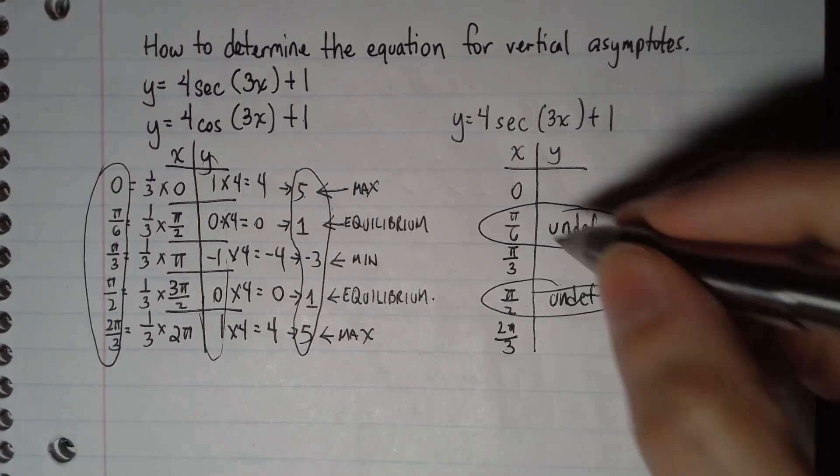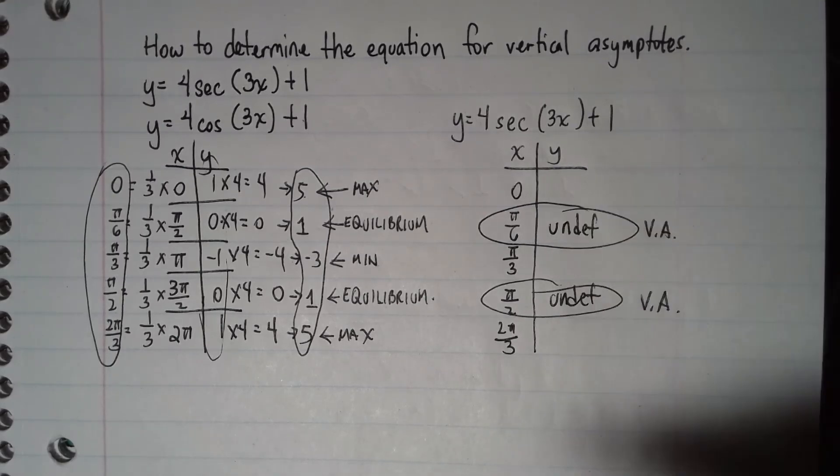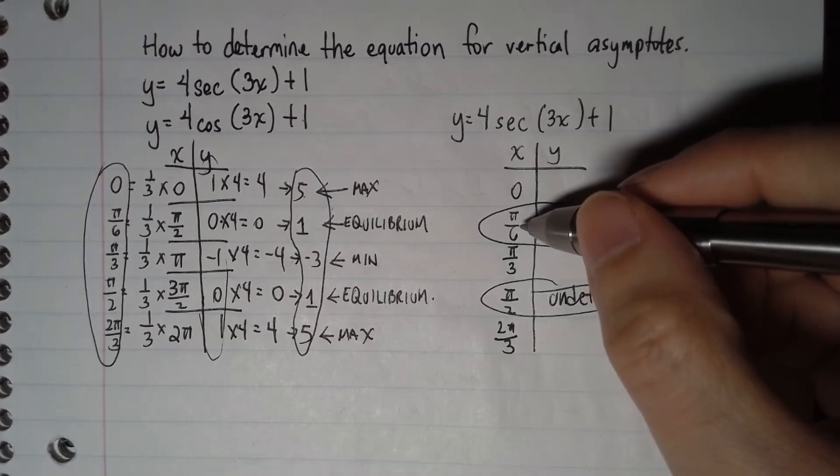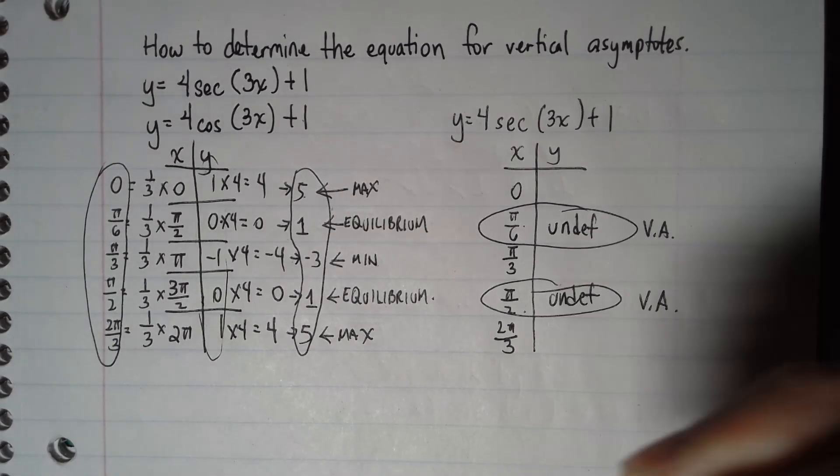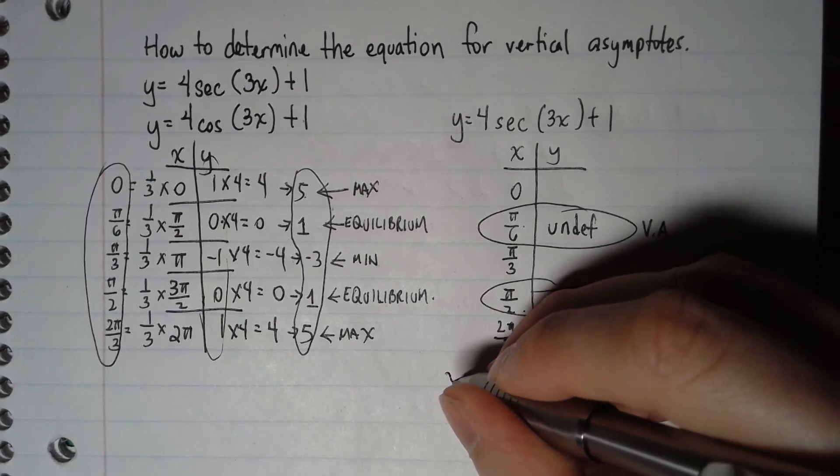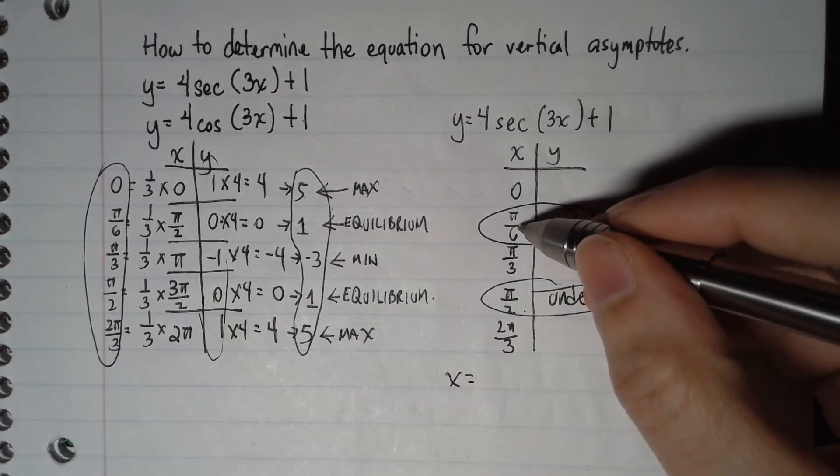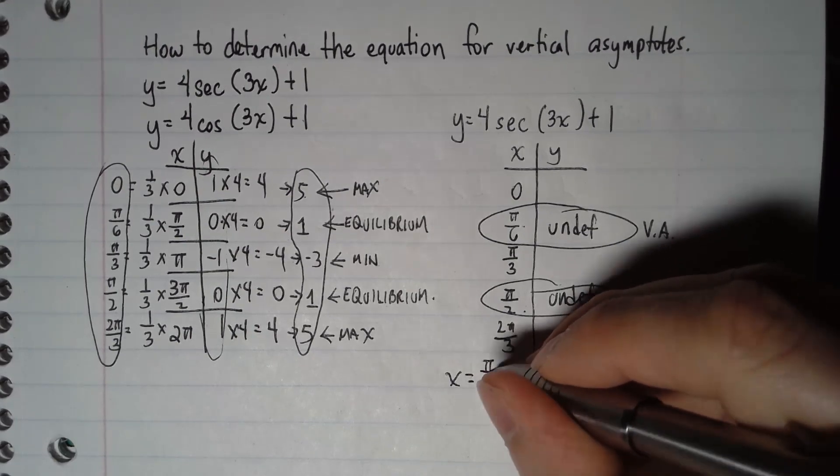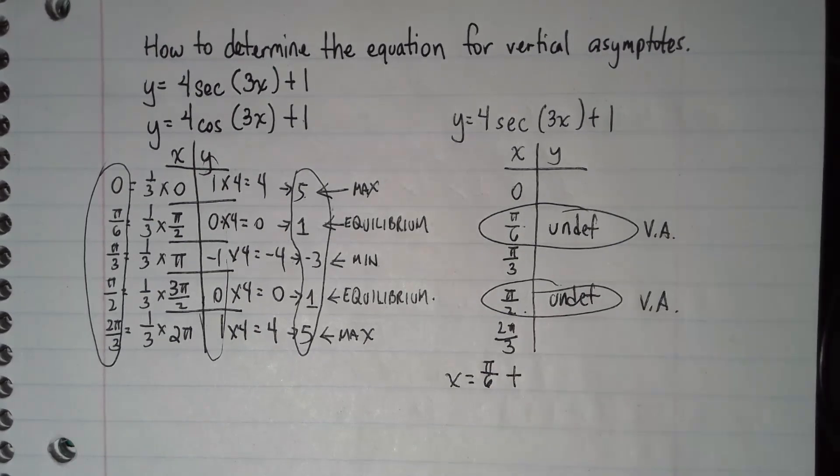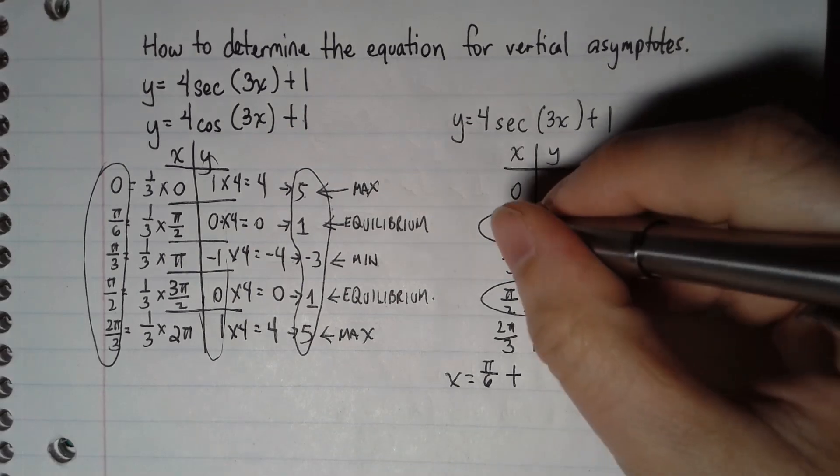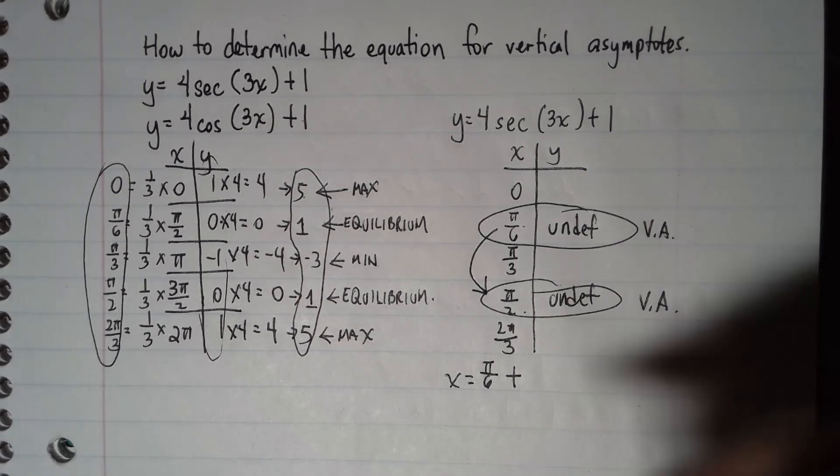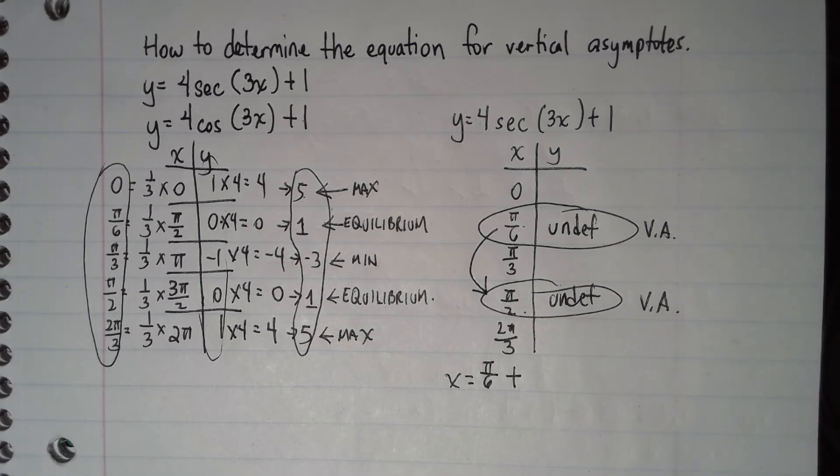So how to write my equation knowing these are my vertical asymptotes? Since I know it happens at π/6 and π/2, the equation will be x equals the first asymptote, which shows up at π/6. So I write π/6 plus—now how do I get from π/6 to π/2? In order to figure that out, I actually have to do some scratch work on the side and subtract.